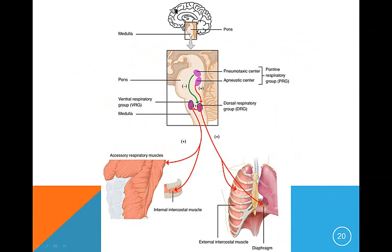This slide shows you the medulla where the inspiratory or respiratory drive in your brain takes place, and then it sends that signal to your internal intercostal muscles, your accessory respiratory muscles, your external intercostal muscles, and your diaphragm. Anything that interferes with that would cause a decreased respiratory drive.